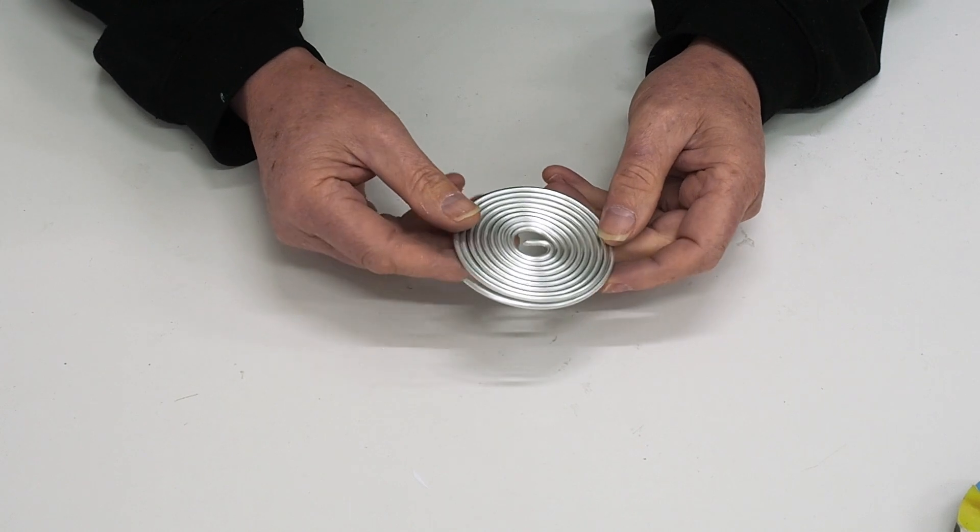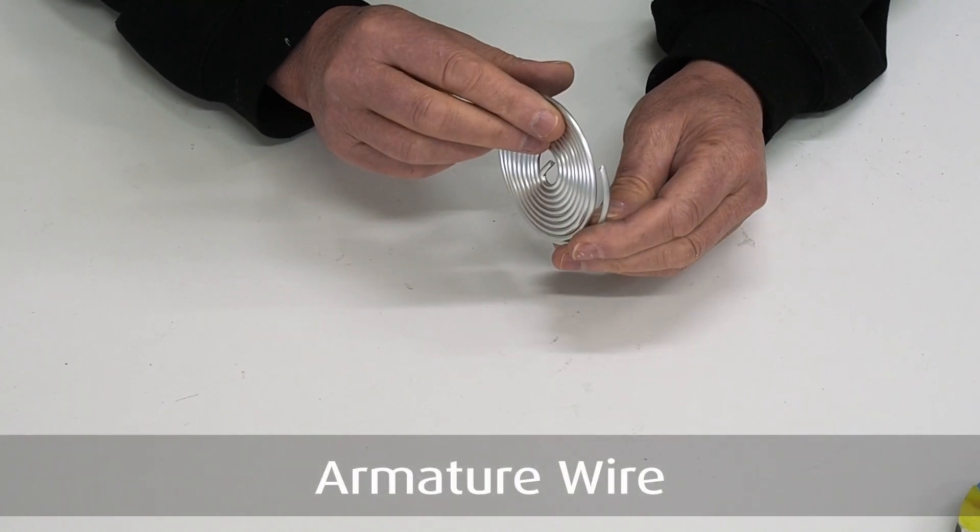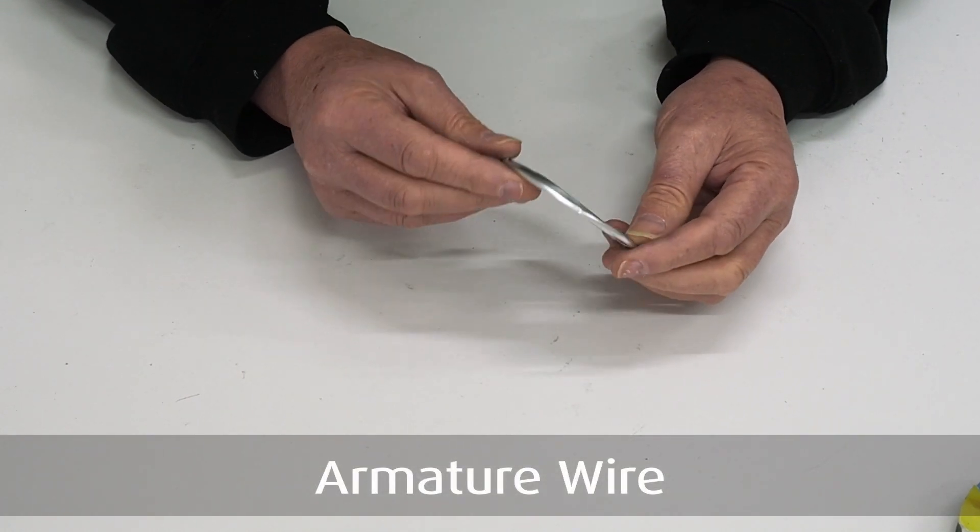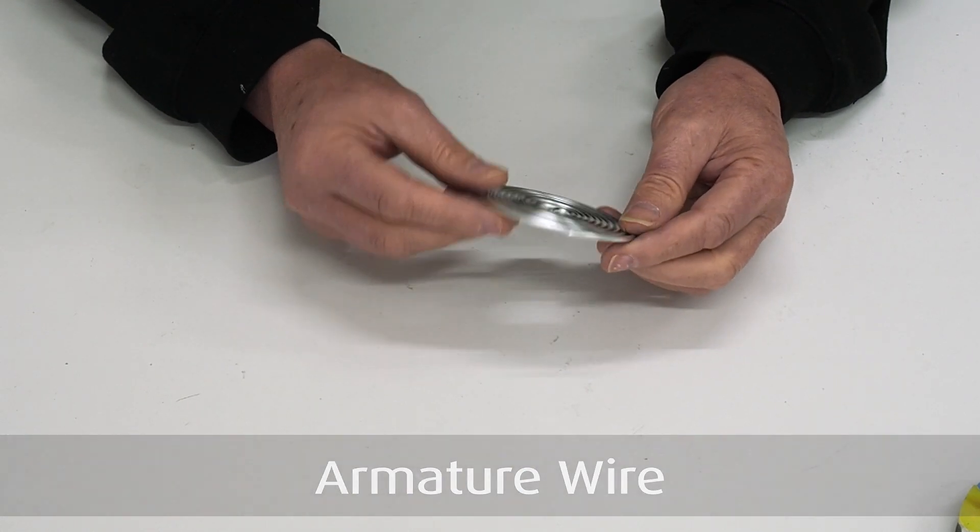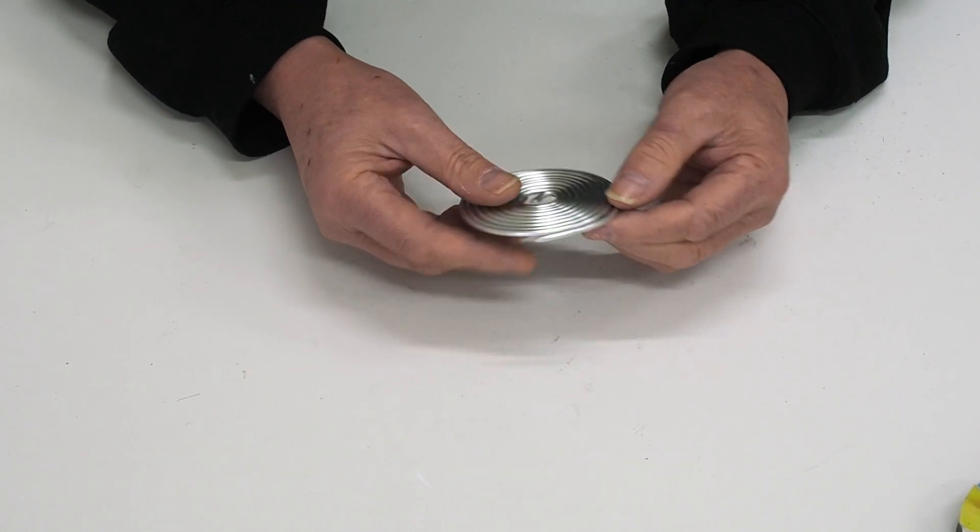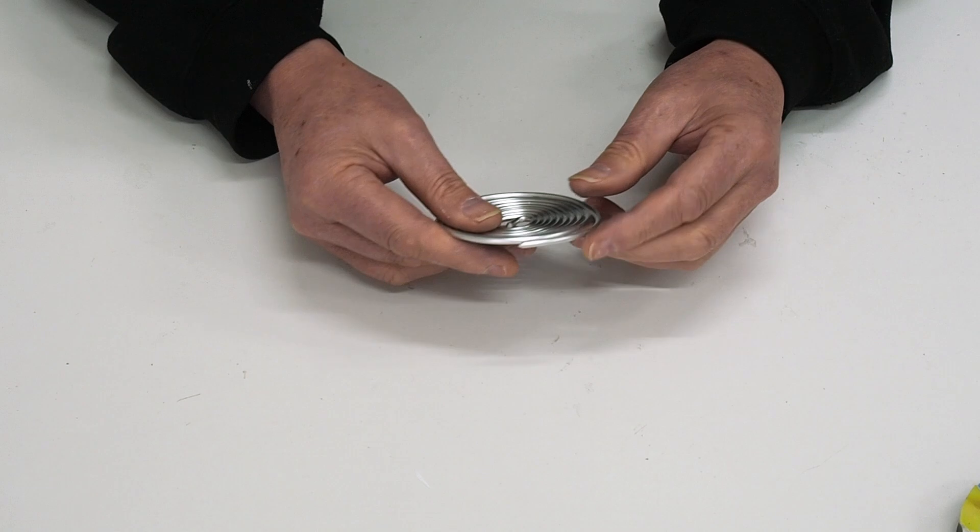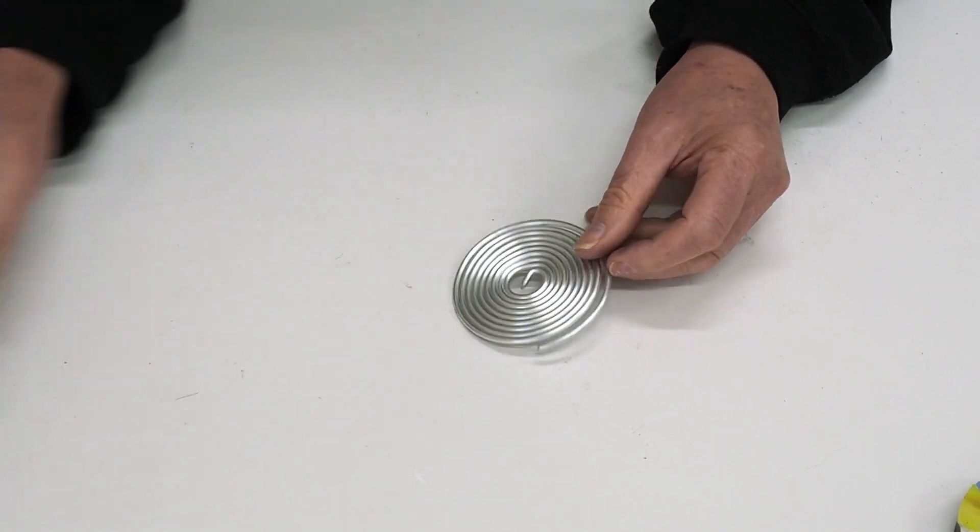This is the wire that I used—it's armature wire. This one here is probably around 5mm, maybe a bit more, and this is quite easy to manipulate, but it does come in different thicknesses.